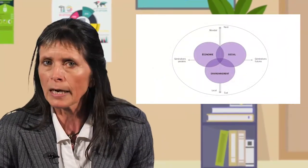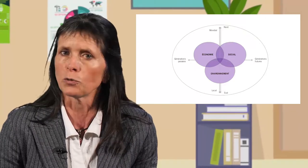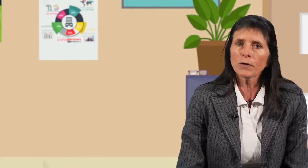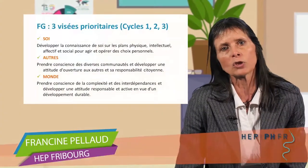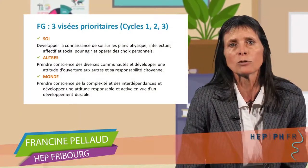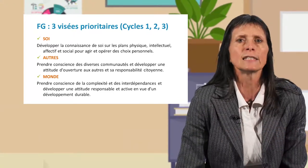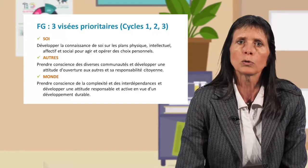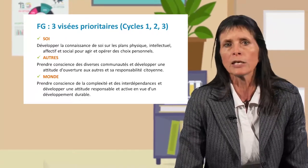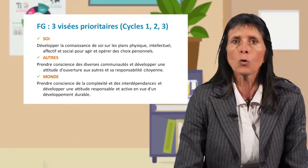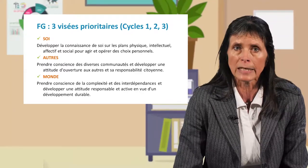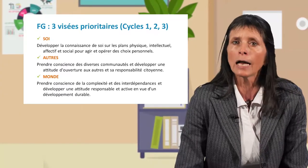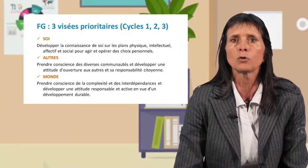De même, nous trouvons le schéma classique du développement durable, version faible, également dans ce document. Enfin, les trois visées prioritaires de cette formation générale pour l'ensemble de la scolarité obligatoire, c'est-à-dire depuis l'âge de 4 ans jusqu'à 15-16 ans, mettent clairement en avant, tant au niveau personnel que dans notre relation au monde, le principe de responsabilité, le développement d'une pensée capable de gérer la complexité, et le développement d'attitudes ouvertes et actives, allant dans le sens de la réalisation d'un développement durable.